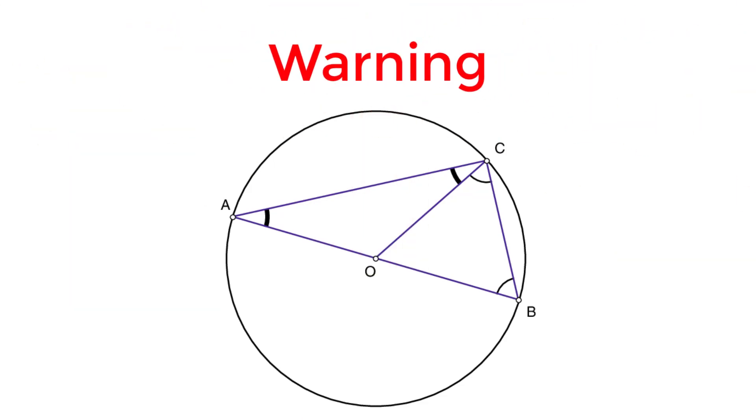In this picture, angle ACB is inscribed in the semicircle, but angle OCB isn't. So for an angle to be inscribed inside a semicircle, two of its vertices have to lie on the two ends of the diameter.